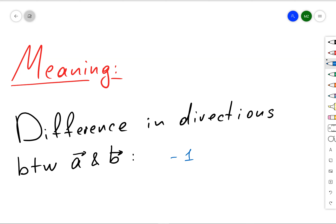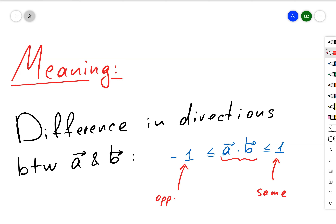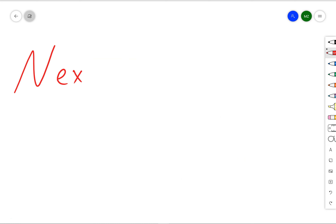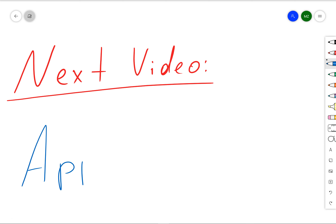So the meaning of the dot product is twofold: from one side it represents the projection of one vector onto another, and from the other side it measures the difference in direction between vectors a and b. In other words, the dot product ranges between negative one and one — one means they point in the same direction, negative one means opposite directions. In my next video I'll talk about applications of the dot product. Thanks for watching, and have a nice day!